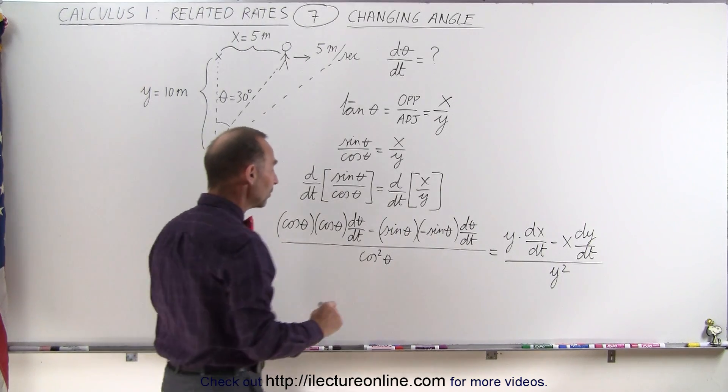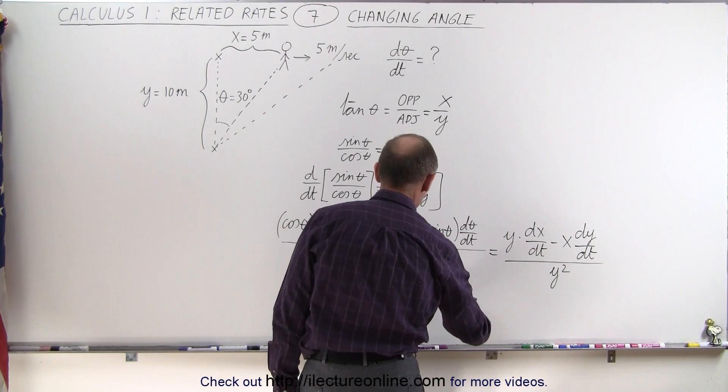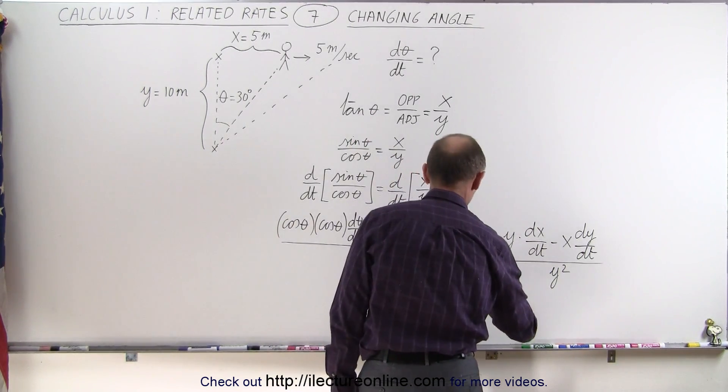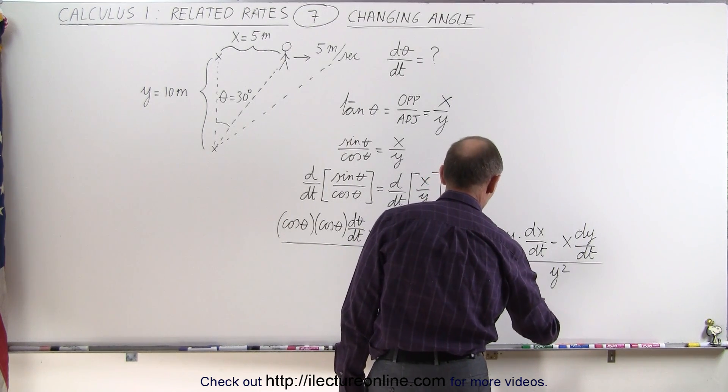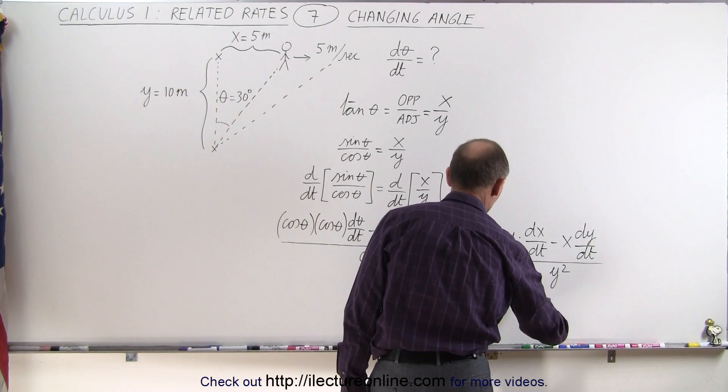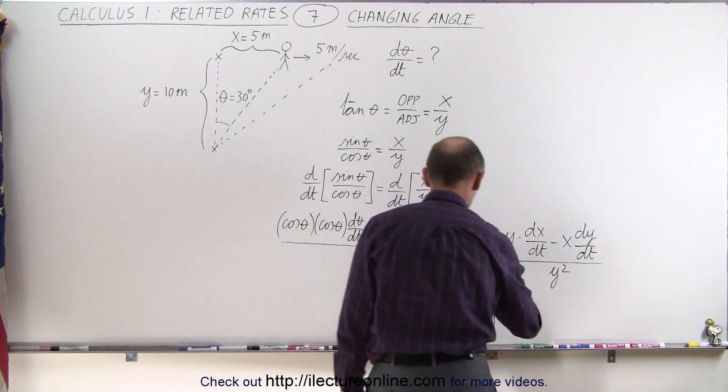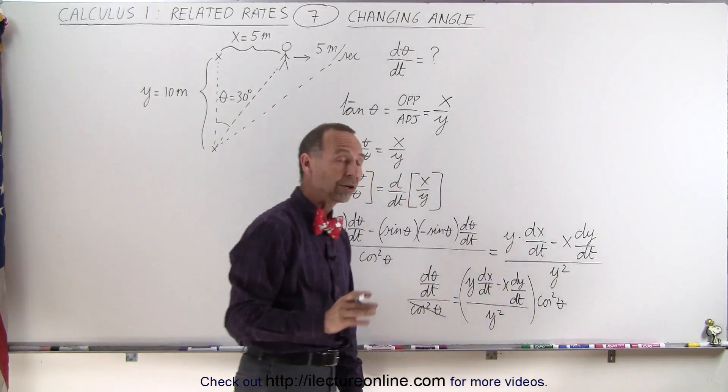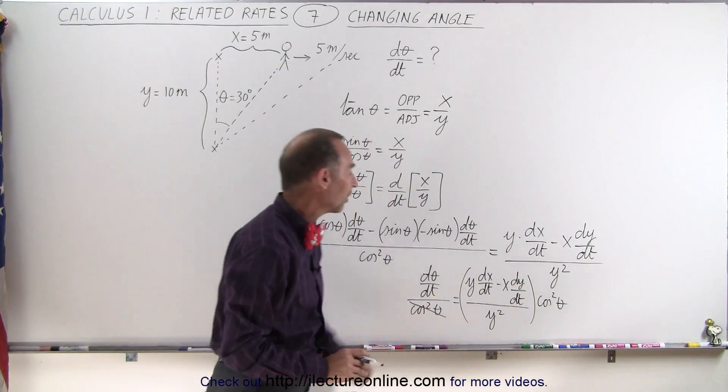And so we can simplify this to d theta dt divided by the cosine squared of theta is equal to y dx dt minus x dy dt, all divided by y squared. And if we move the cosine squared of theta to the right side, we get rid of that here, we now have an expression that tells us d theta dt in terms of everything else that we know.